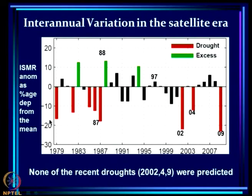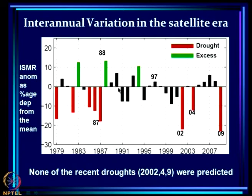During the era from 1979 to 2009, we see several droughts: 1979, 1982, 1985, 1986, 1987, and then a reasonably good period, ending with frequent droughts in 2002, 2004, and 2009. The excess rainfall years are relatively few: 1983, 1988, and also 1994.